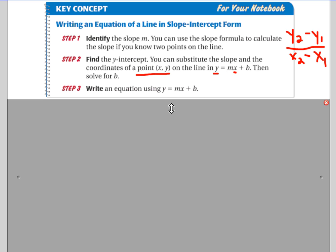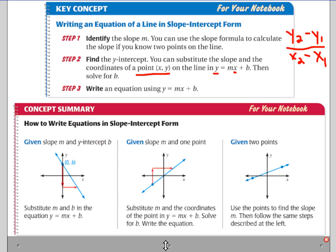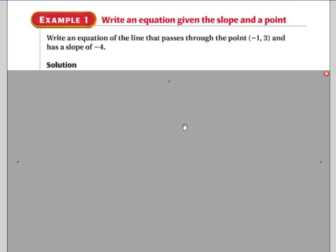There are three different ways we can do this. First, if we are given the slope and the y-intercept, which is what we did in the previous video. Second, when you are given the slope and one point. And third, when you are given just two points and need to figure out both the slope and the intercept.